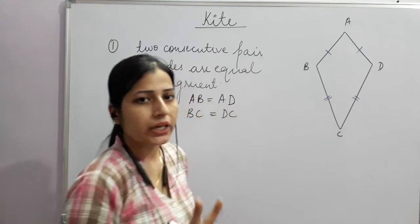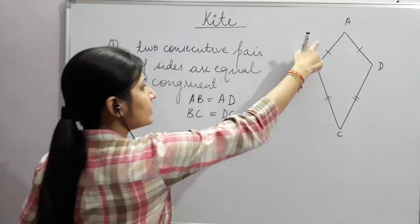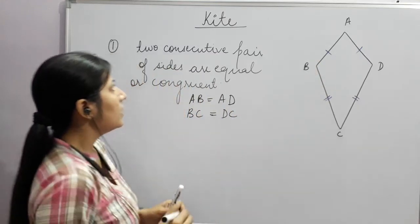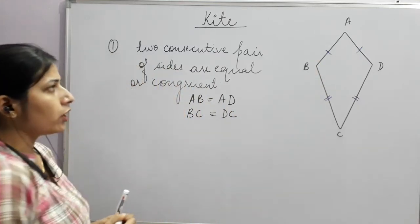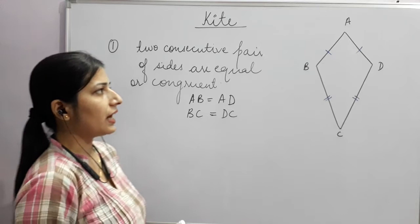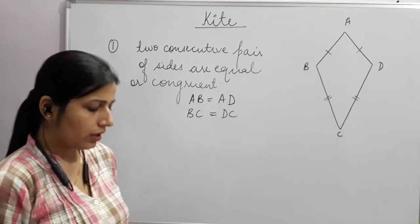A pair always has two members. So one pair is AB = AD, and the other pair is BC = DC. That gives us two consecutive pairs of sides that are equal.